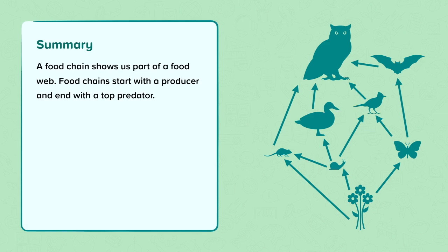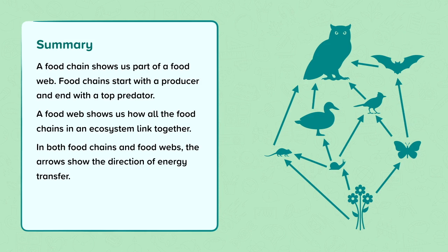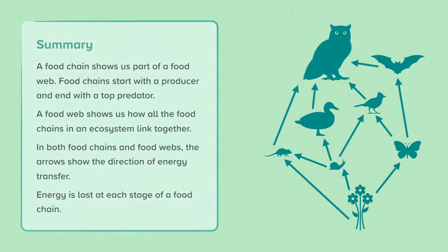To summarise: a food chain shows us part of a food web. Food chains start with a producer and end with a top predator. A food web shows us how all the food chains in an ecosystem link together. In both food chains and food webs, the arrows show the direction of energy transfer. Energy is lost at each stage of a food chain.